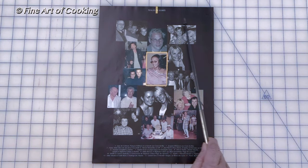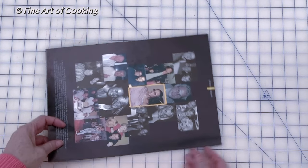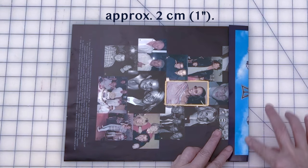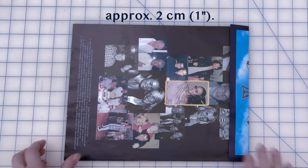We begin by folding down horizontally approximately 2 centimeters or 1 inch from the top. This is for strengthening the edge of the box. Next, fold the paper in half horizontally.